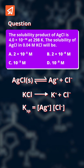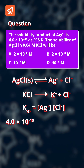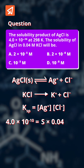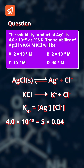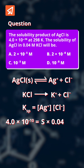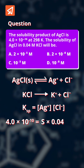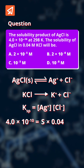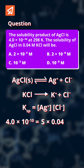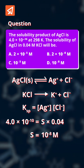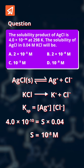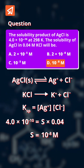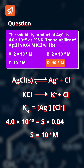The solubility product is 4 × 10⁻¹⁰, which equals solubility (S) multiplied by the chloride concentration from the strong electrolyte, that is 0.04 molar. Therefore, the solubility works out to be 10⁻⁸ molar — the correct answer is option D.